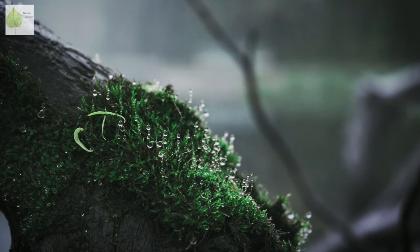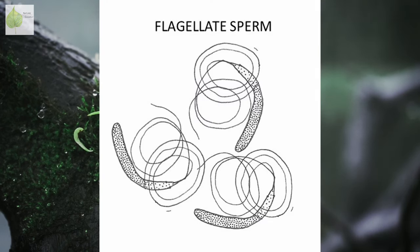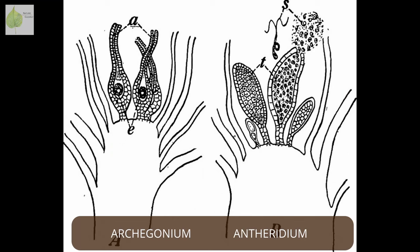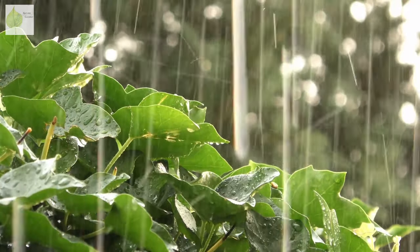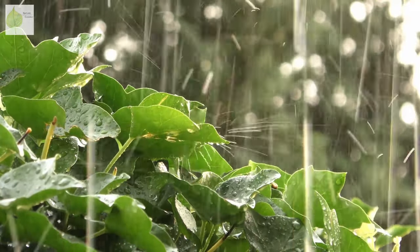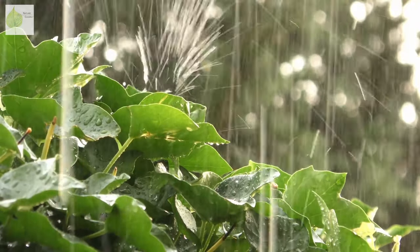Now that there are sperm and eggs, we need suitable conditions for these two reproductive cells to meet. In bryophytes, their meeting requires water. Mosses are characterized by their flagellate sperm that need water in order to swim to the egg. One of the most commonly discussed methods is transportation of sperm to egg via a raindrop that lands on the antheridium, splashing the sperm out, which then lands in an archegonium.